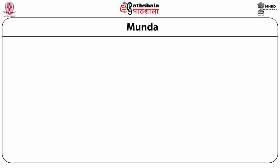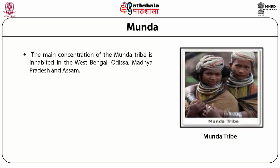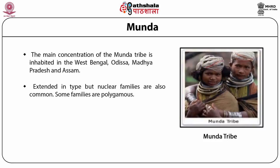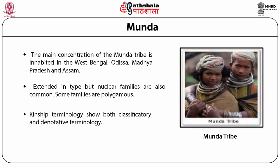The main concentration of the Munda tribe is in West Bengal, Odisha, Madhya Pradesh, and Assam. They have extended-type families, but nuclear families are also common. Some families are polygamous. Kinship terminology shows both classificatory and denotative terminology.